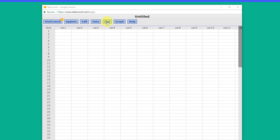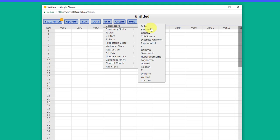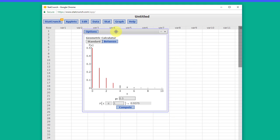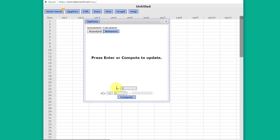Okay, I have StatCrunch here, and we go to Stat, Calculators, and Geometric, and we bring up what looks like our typical calculator that we've been doing with binomial and the normal. Here we need to enter our p, which is 0.3.